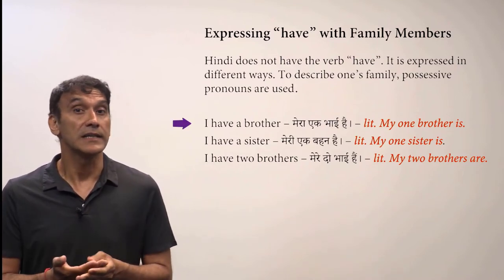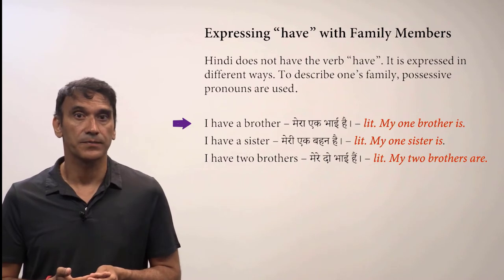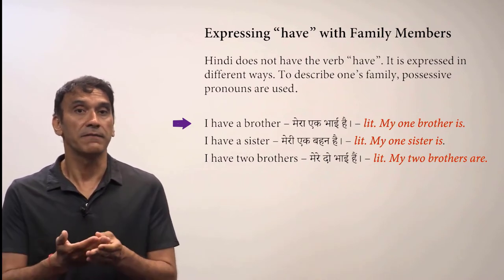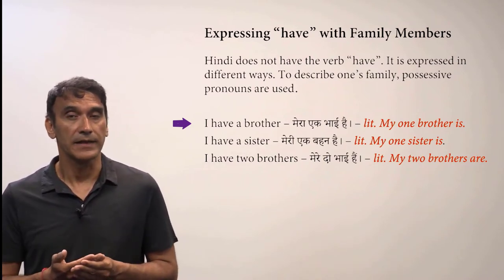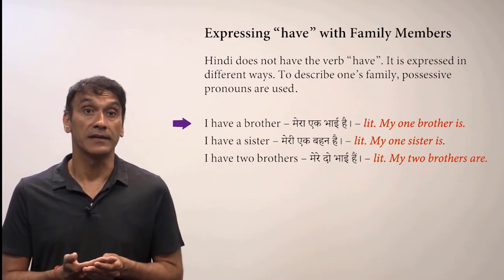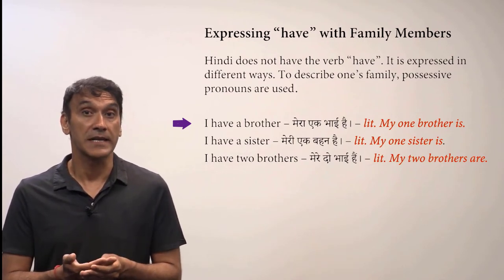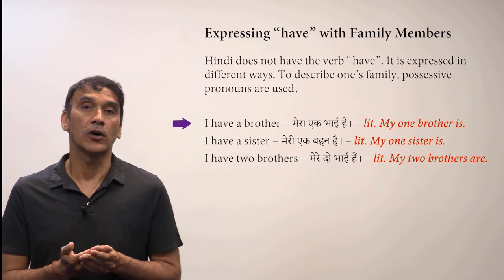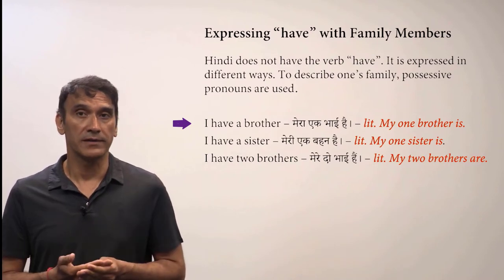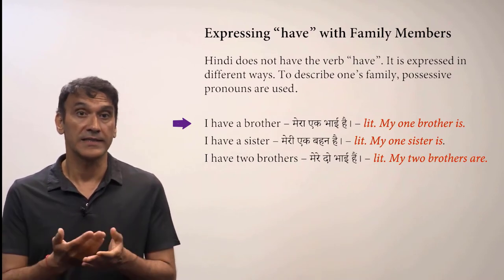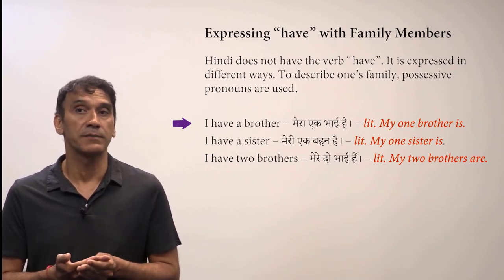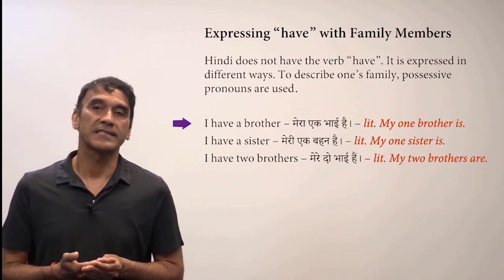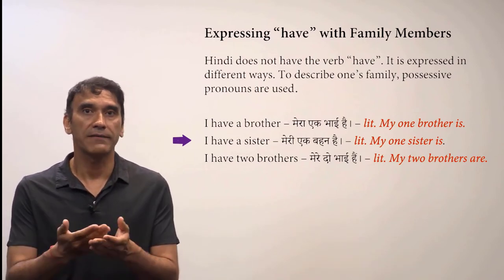To express the verb 'have' with family members, possessive pronouns are used. Here are some examples of describing the family. The sentence 'I have a brother' is expressed as mera ek bhai hai. The literal word order would be 'my one brother is.' This is how the verb 'have' is used to describe the family in Hindi.